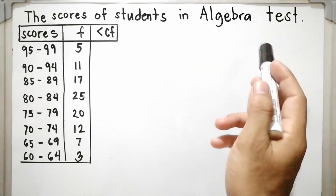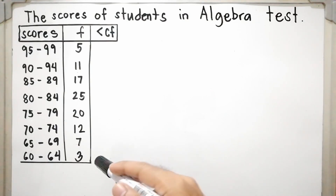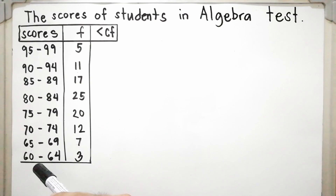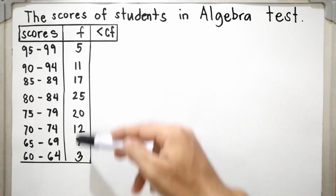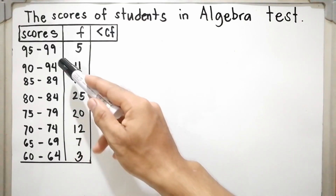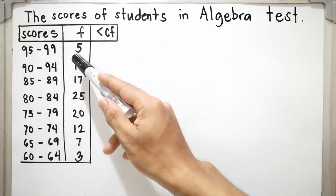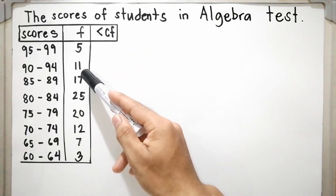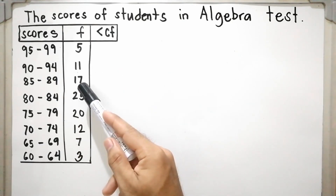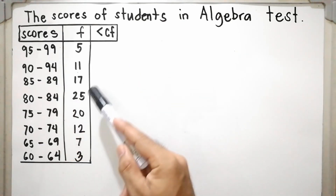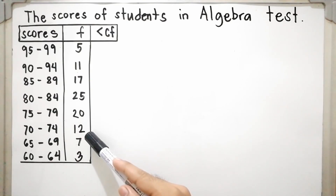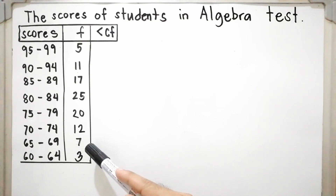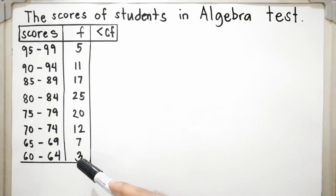Let us have an example: the scores of students in algebra tests. As you can see, it is arranged using a frequency distribution table where the scores are in terms of class interval and the respondents are in frequency. For 95–99, there are 5 students; 90–94 has 11; 85–89 has 17; 80–84 has 25; 75–79 has 20; 70–74 has 12; 65–69 has 7; and 60–64 has 3 students.